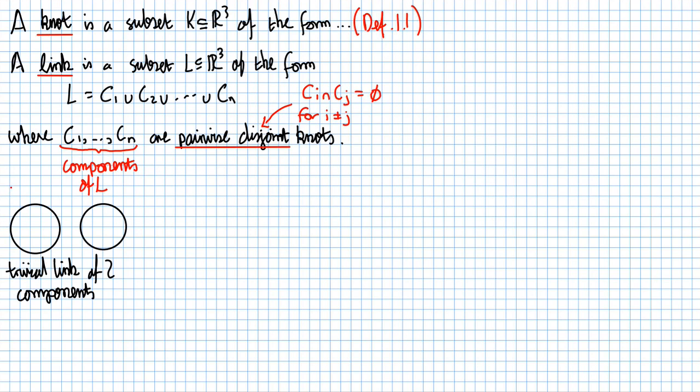This is a knot, it's a copy of the unknot inside R³, let's call it C₁. This is a knot, it's another unknot, it also lives inside R³, we call it C₂. So L is the union of C₁ and C₂. C₁ and C₂ are knots and they are pairwise disjoint, their intersection is empty. So this is indeed a link.